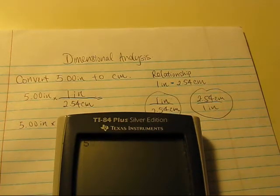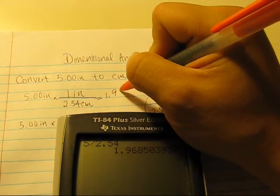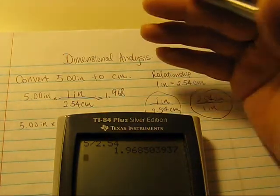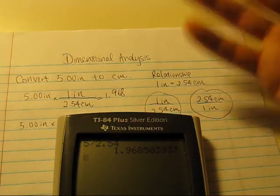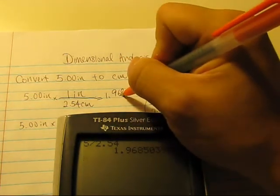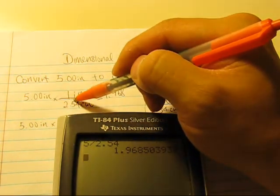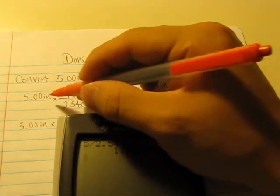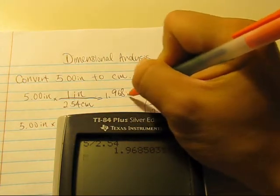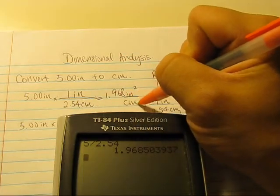5 divided by 2.54 is 1.968. Okay. Now here, let's not worry about the significant figures yet. Because I want to focus on the dimension analysis. So you got this number. Now, this is not the end, because this is just 5 divided by 2.54. And you have to take care of the units at the same time. So inches times inches, it is inches squared. And in the denominator, it is centimeters.